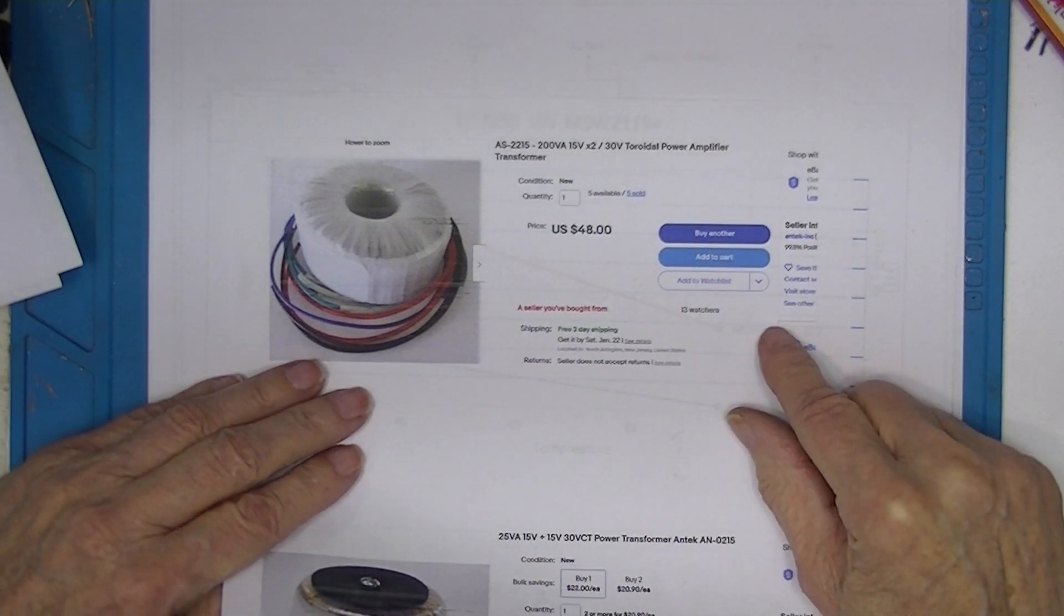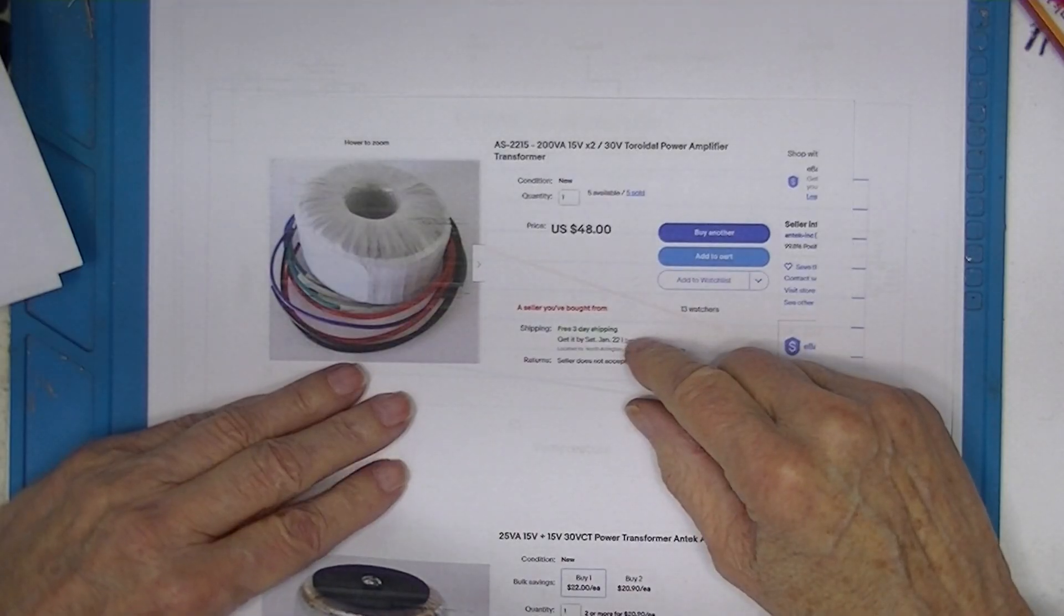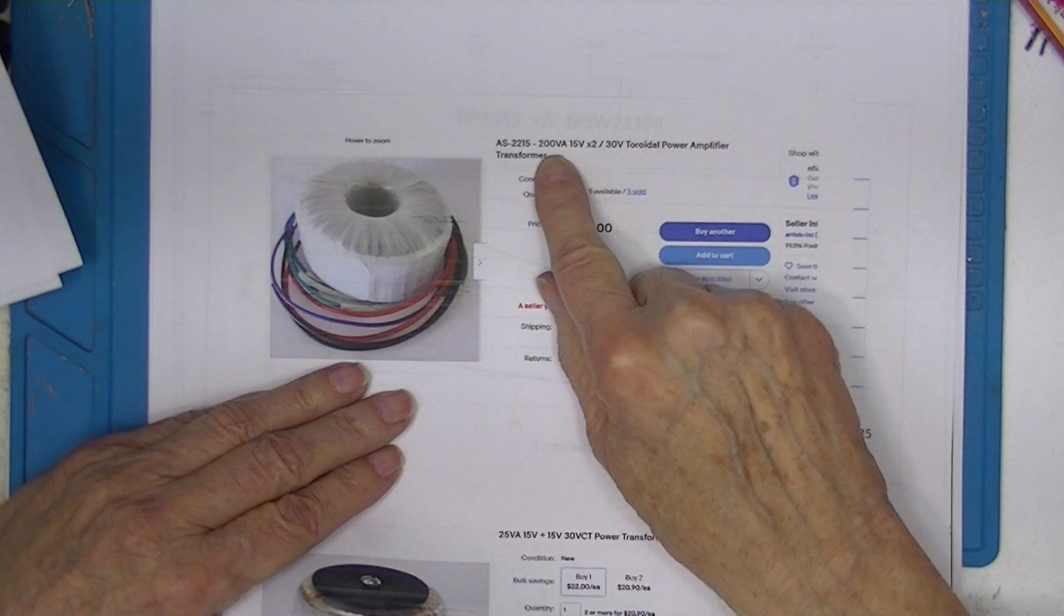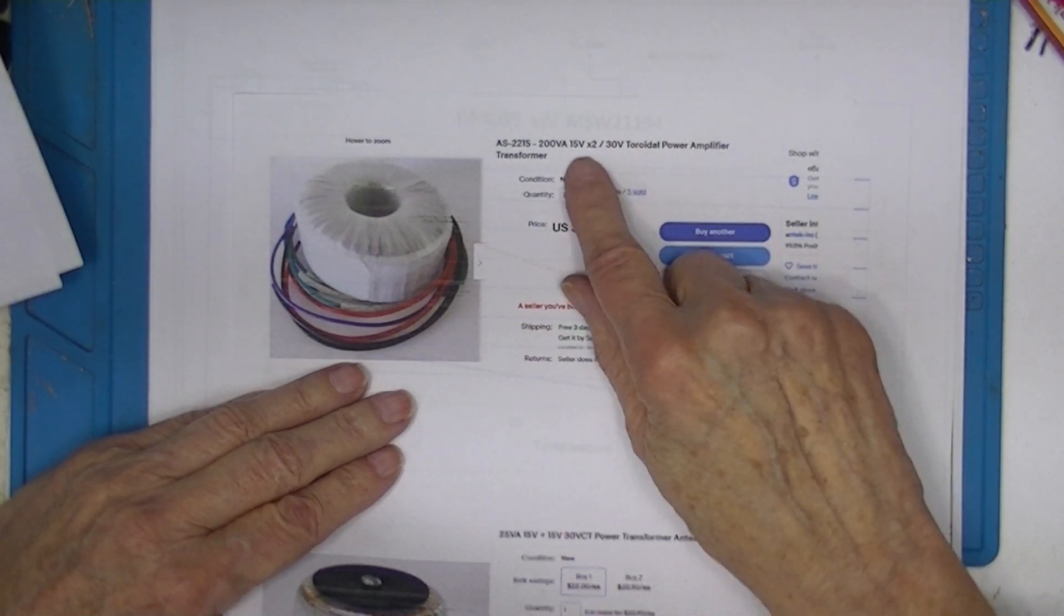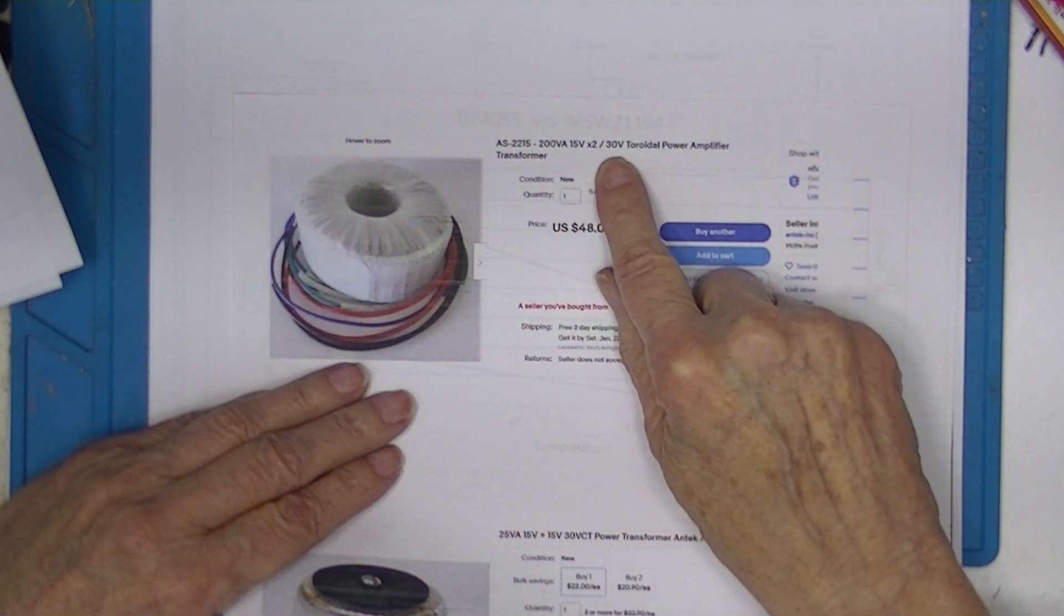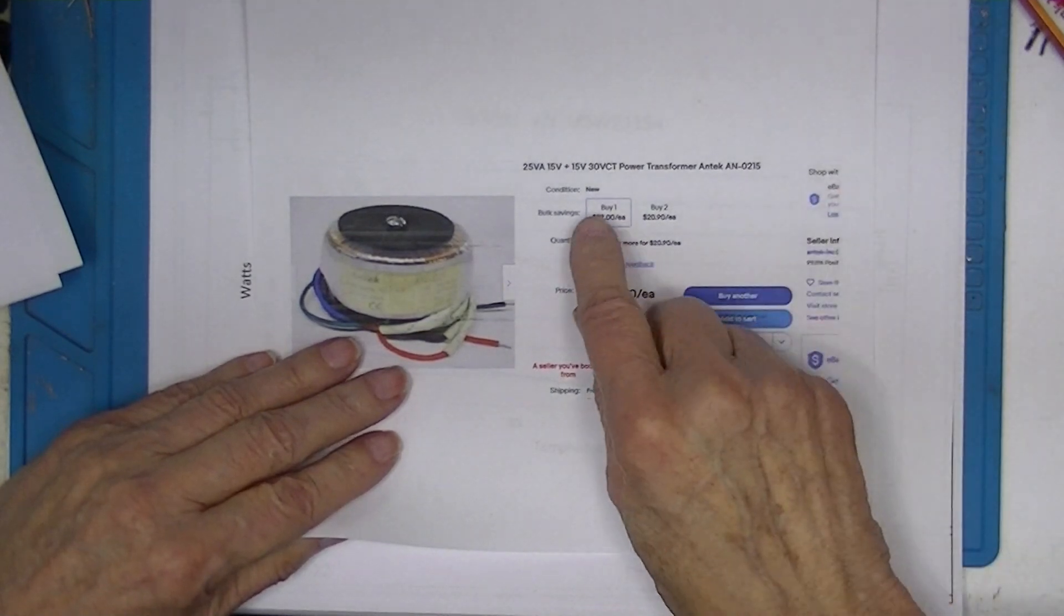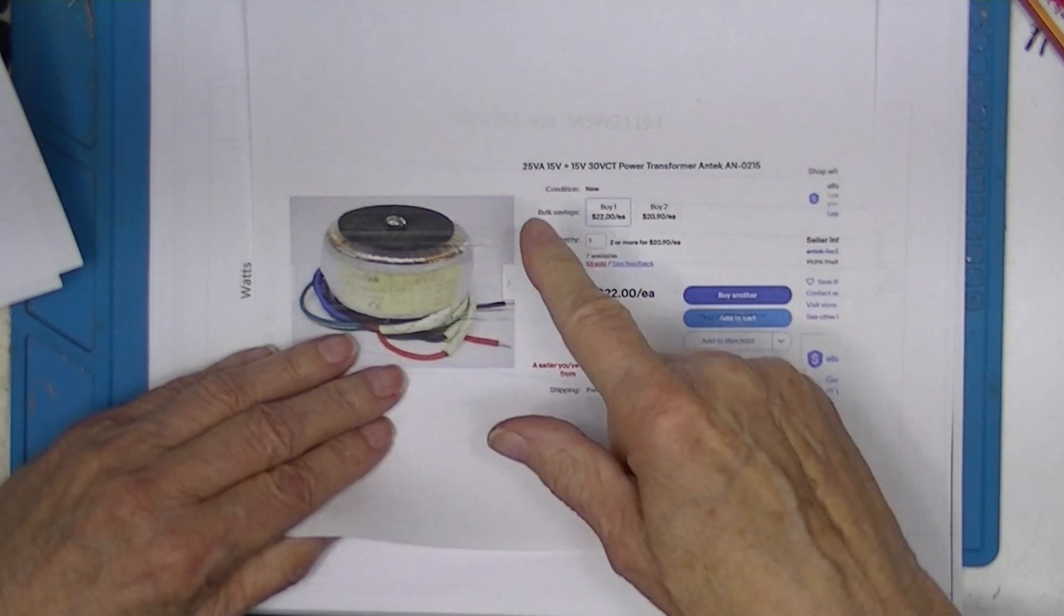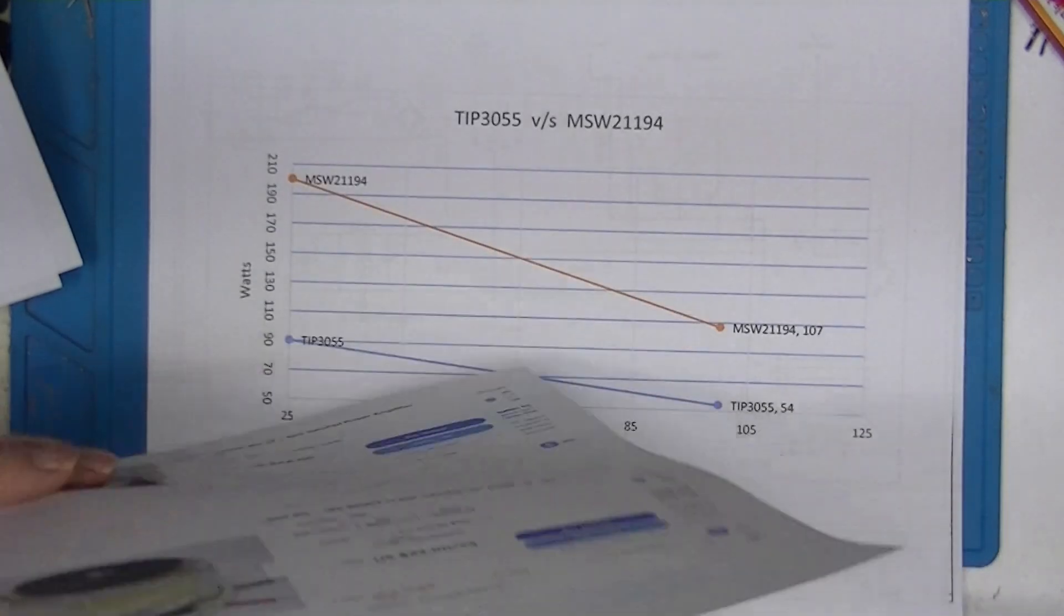I've ordered some transformers. Now, these are domestic. They're sourced domestically. I don't know if they're probably of Chinese origin. For the main power transformer, I've ordered a 15 volt times two or a 15. It'll have two secondary windings, 15 and 15. 200 VA. 50 bucks. I've also ordered a 15 and a 15, that is two secondaries, each 15 volts. And, not shown here, is the same transformer in 12 by 12. So I'm waiting for those parts to arrive.